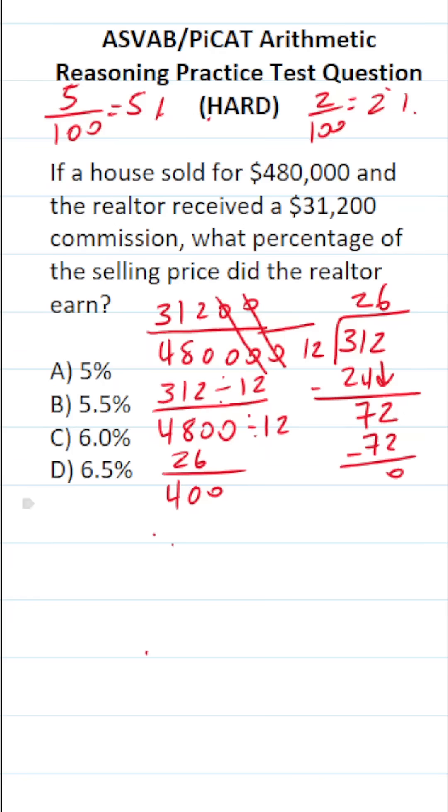So we've already reduced this to be 26 over 400. And both of these have a common factor of 2. 26 divided by 2 is 13. You should be able to do that mentally. 400 divided by 2 is going to be 200.